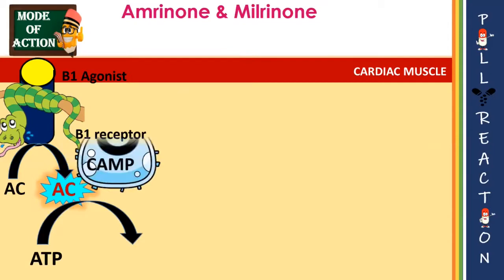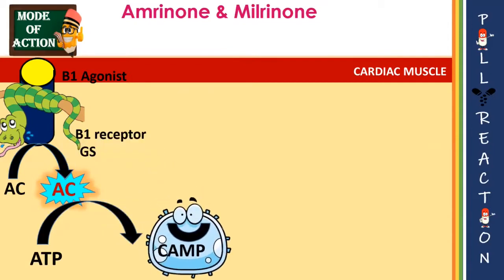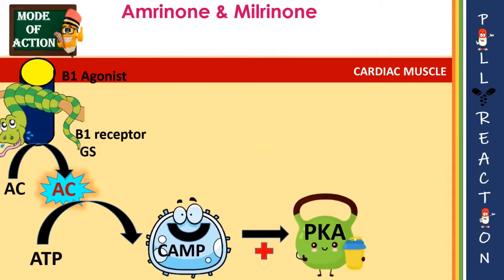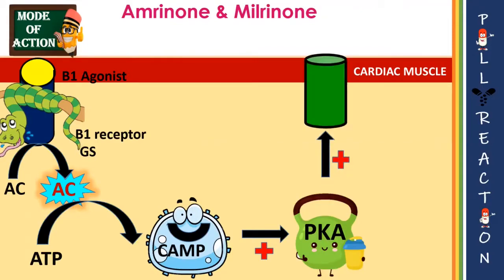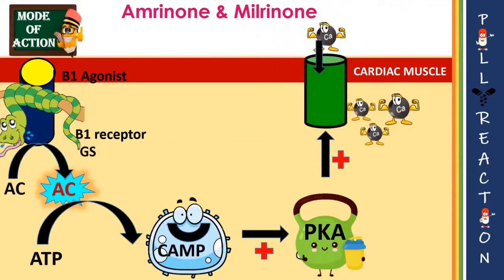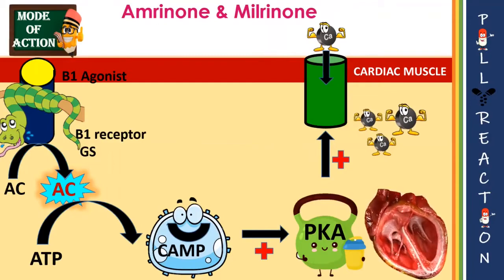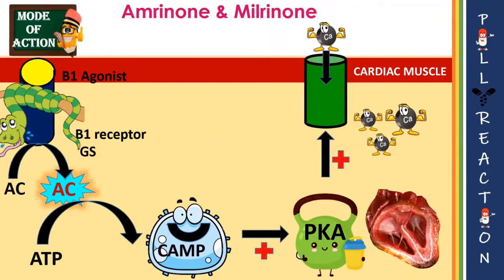Adenylyl cyclase stimulates the formation of cyclic AMP. Cyclic AMP in turn activates cyclic AMP-dependent protein kinase A (PKA). Protein kinase A is a phosphorylating enzyme responsible for the opening of calcium channels, so calcium can enter into the cardiac muscle.